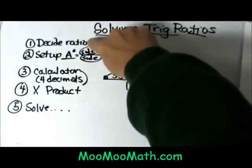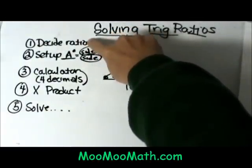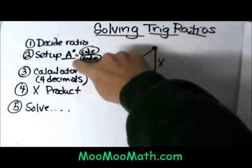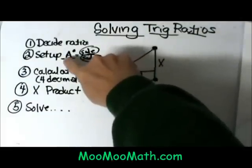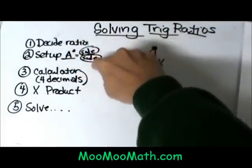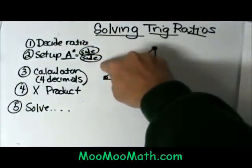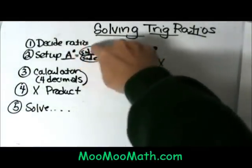First you're going to decide which trig ratio we're dealing with. Then you're going to set up the problem with three different values plugged in: an angle and then the ratio of the two sides. So those are the three parts, an angle and the two sides.